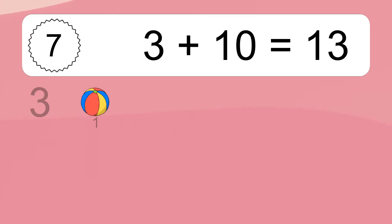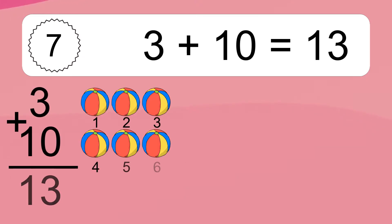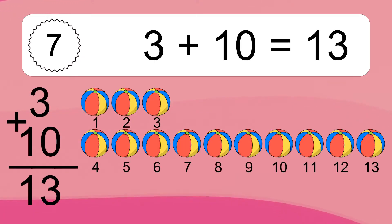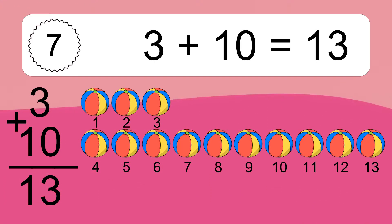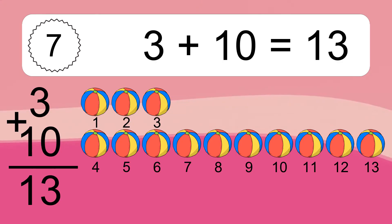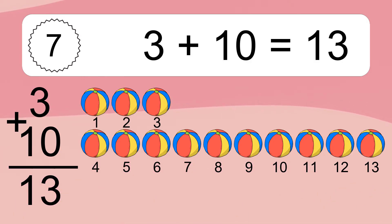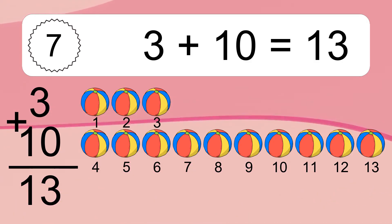Three plus ten equals what? Three plus ten equals thirteen. Let's count it: one, two, three, four, five, six, seven, eight, nine, ten, eleven, twelve, thirteen.